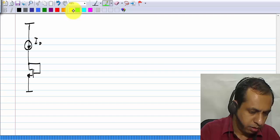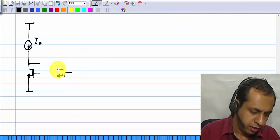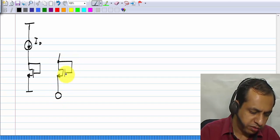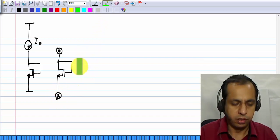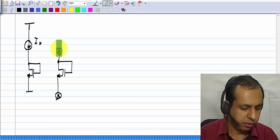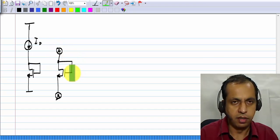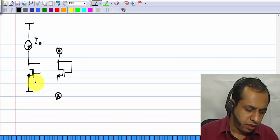The MOS transistor has three terminals, and with this connection, you can think of that as a two terminal element. So, I could put this MOS transistor in a box and bring out only two terminals, and one of the terminals is connected to both the drain and the gate.